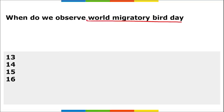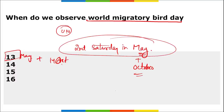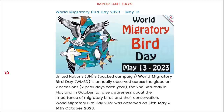When do we observe World Migratory Bird Day? It is observed by the UN annually across the globe on two occasions — the second Saturday of May and the second Saturday of October. This year it falls on 13th of May as well as 14th of October. The theme for World Migratory Bird Day is 'Water Sustaining Bird Life.'